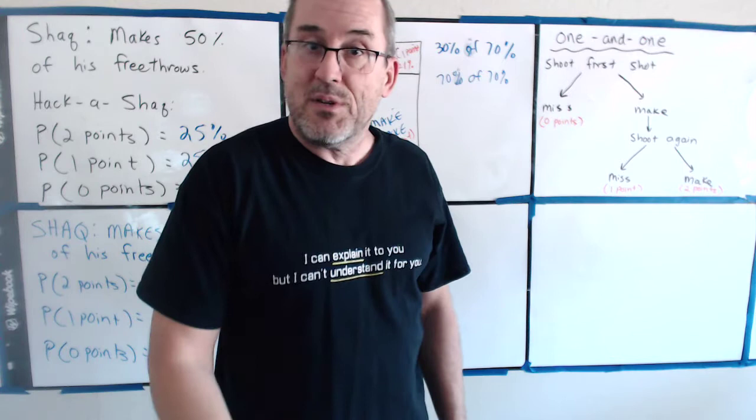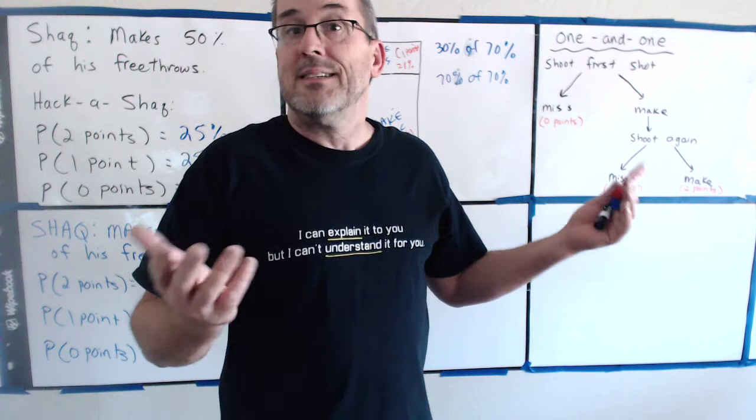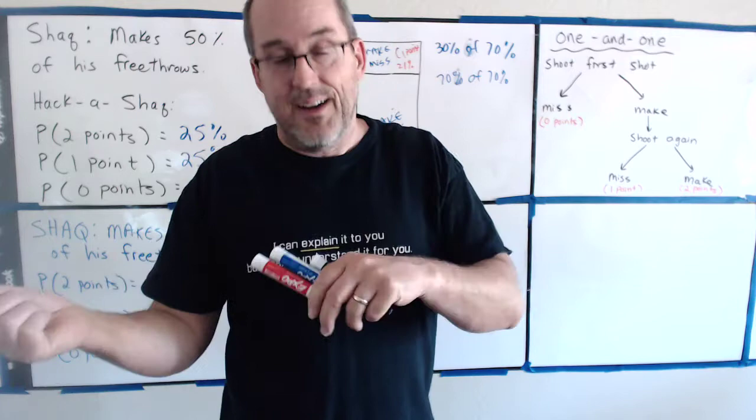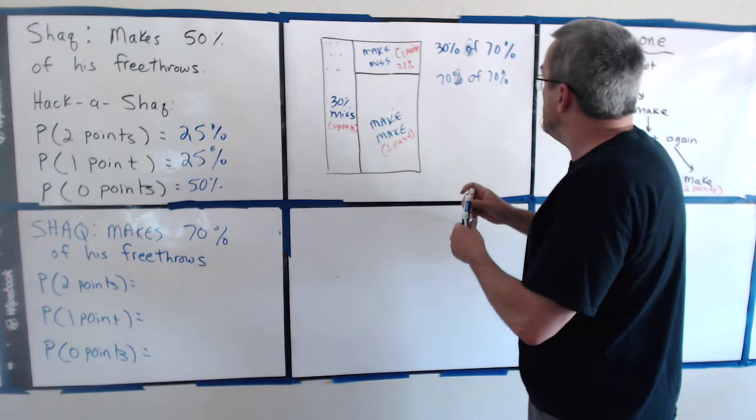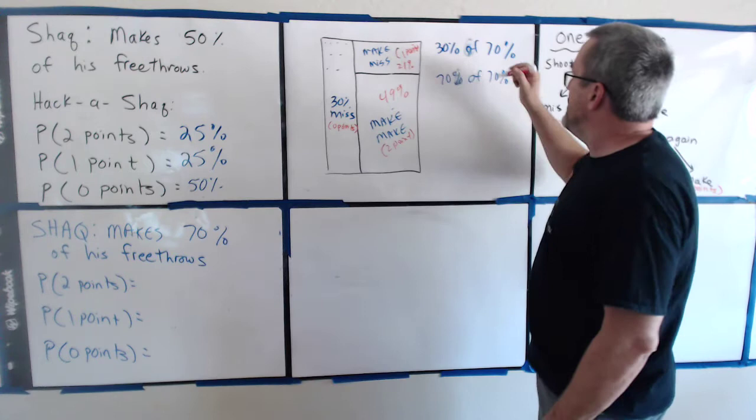70. 70 divided by 10 is 7. 70% is just 7 10%, 7 of those. So, 7 sevens would be 49. So, this would be a 49%. So, 30% of 70% is 21%. 70% of 70% is 49%. Check it all out. 49 plus 21.